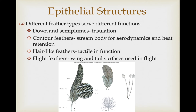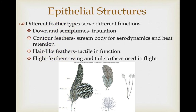There are different feather types that serve different functions. Down and semi-plumes are important for insulation and helping endothermic animals retain heat. Contour feathers overlie the down feathers, providing a streamlined body for aerodynamics and helping retain heat where down feathers are held underneath. Hair-like feathers are used for tactile functions — often associated with flight feathers to ensure proper positioning, and with the bill to help in foraging. The feathers most people are familiar with are the flight feathers — very strong but lightweight wing and tail surface feathers important for flight.